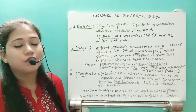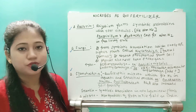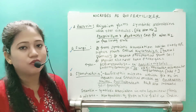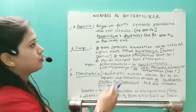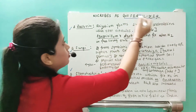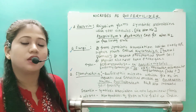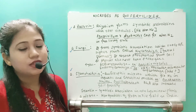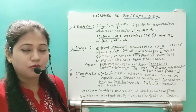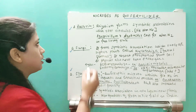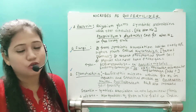Hello students, today we are moving to the last part of the chapter 'Microbes in Human Welfare' - that is biofertilizers. So what are biofertilizers? They are fertilizers of biological origin, meaning they are living organisms. Basically biofertilizers are made from three types: bacteria, fungi, or cyanobacteria.